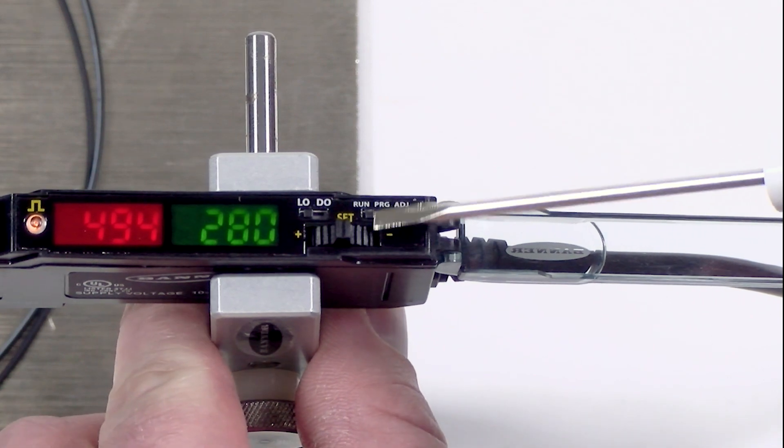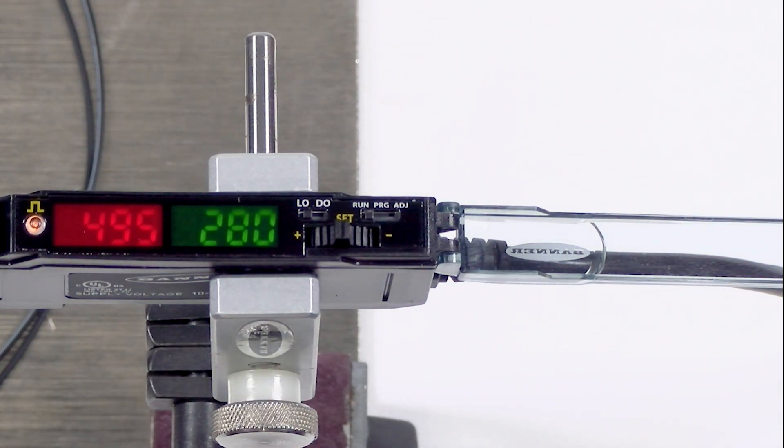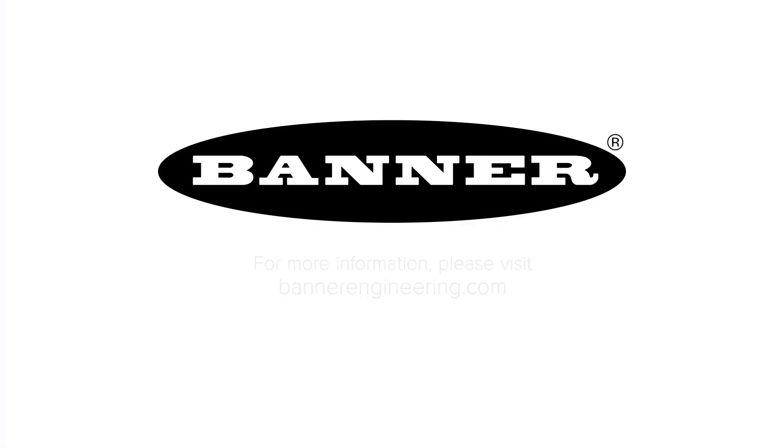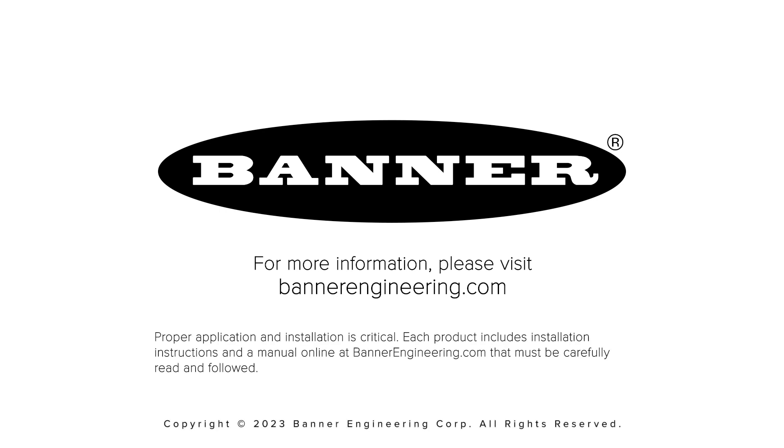Move the mode switch back to run to lock in the amplifier settings. That covers the basics of the DFG two-point teach configuration. For more information visit our website at BannerEngineering.com.